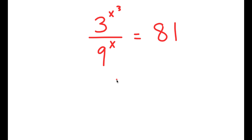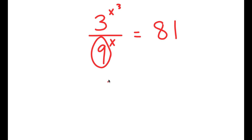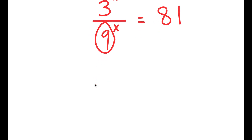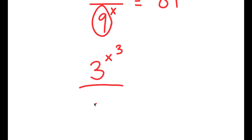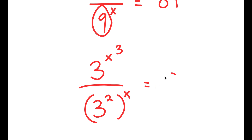To solve this, I'm going to first write 9 as 3 squared. So I get 3 to the power of x to the power of 3 over 3 squared to the power of x, which is equal to 81.